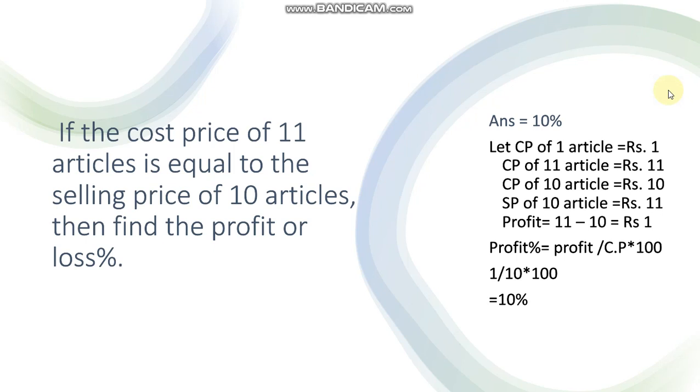Now 11 articles ki cost price hai 11 rupees, toh 10 articles ki selling price kitni hoegi? 11 rupees. Now there will be profit 11 minus 10. SP of 10 articles minus CP of 10 articles is equal to profit, that is rupees 1. Profit percent is equal to profit upon CP multiply by 100. Profit is 1, 1 upon CP that is 10 into 100, you will get 10 percent.